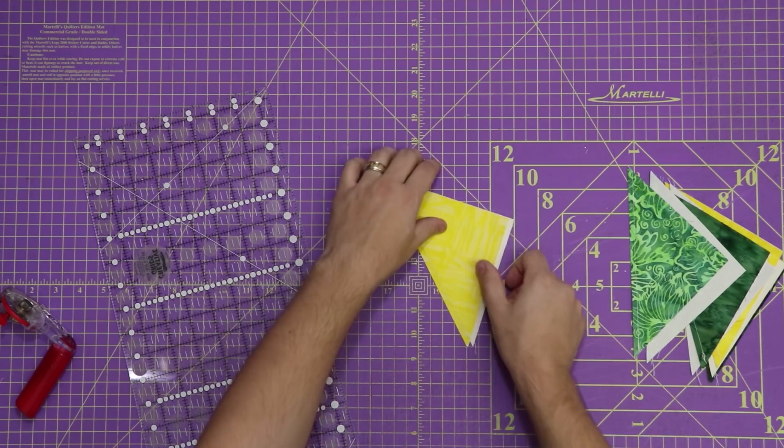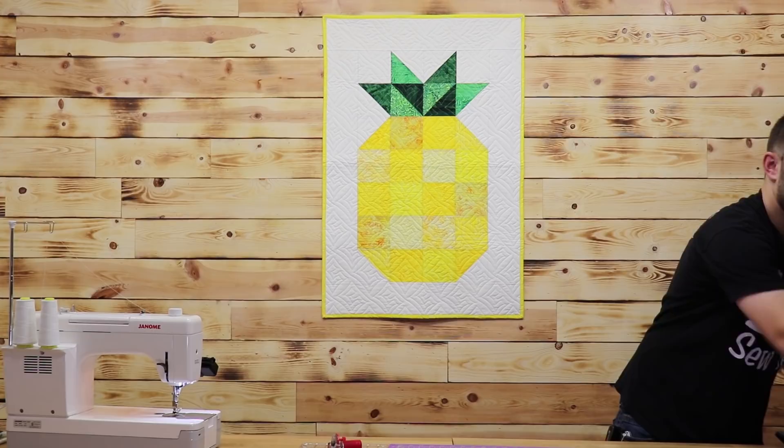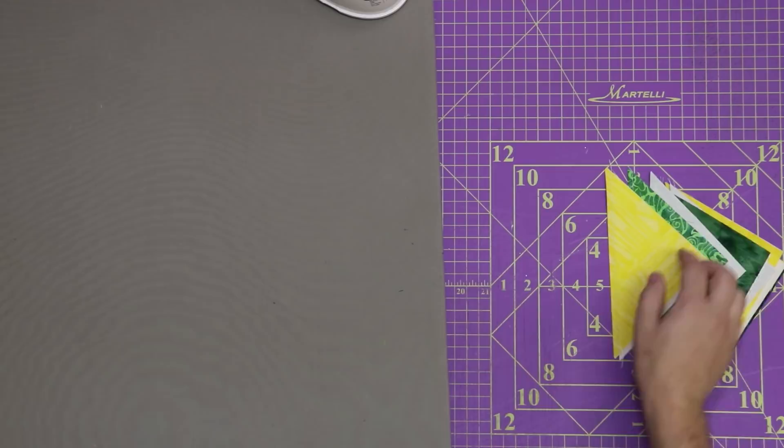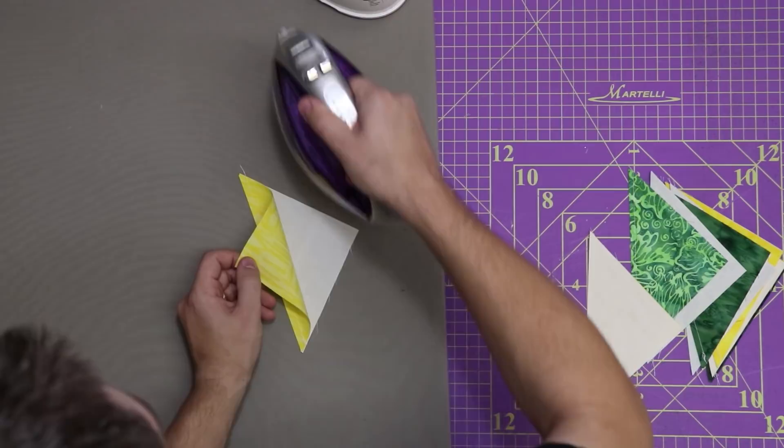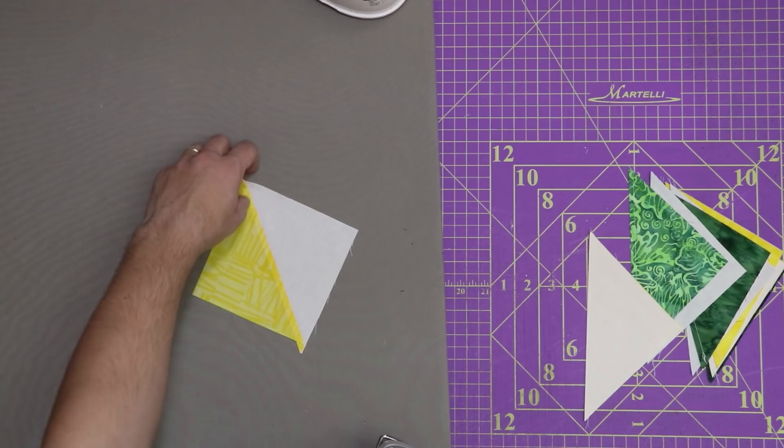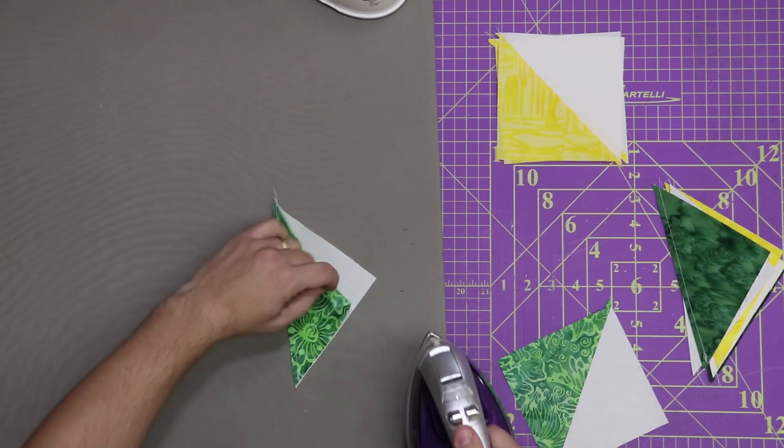Now that we have these all cut I'm going to bring them over to my iron here and I'll slide the iron over so everyone can see. I'm going to start ironing these to the dark side. I am going to stack them in color so I'm going to put all my whites and yellows together, all my greens and whites together, so on and so forth.